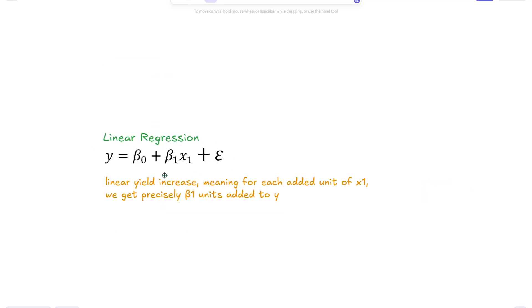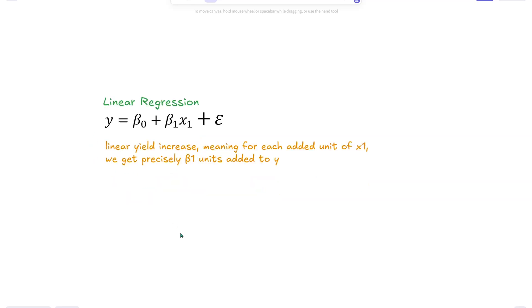This is what a typical linear regression equation looks like. It has a linear yield increase, meaning that for each added unit of x1, our predictor, we get precisely b1 units added to our target variable. More often than not, linear regression doesn't cut it when we're trying to fit a model to a data set.